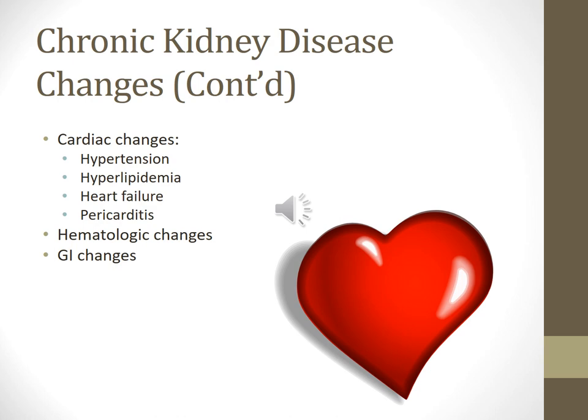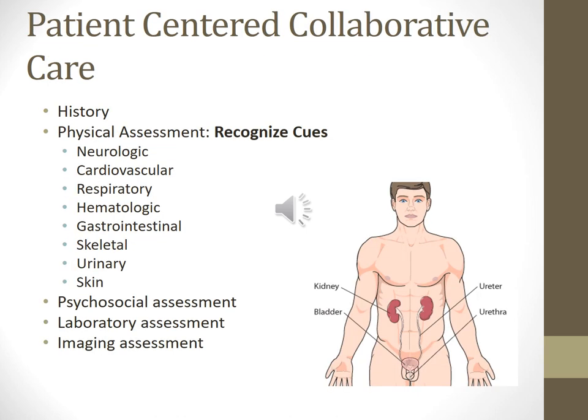Gastrointestinal changes from uremia include halitosis (bad breath), stomatitis, anorexia, nausea and vomiting, and hiccups. Patient-centered collaborative care requires a thorough history: age, gender, weight, existing kidney disease, drug use (over-the-counter, illicit, or prescribed), any kidney stones, dietary habits, weakness, bruising or bleeding from the uremic state, and appearance and odor of urine.